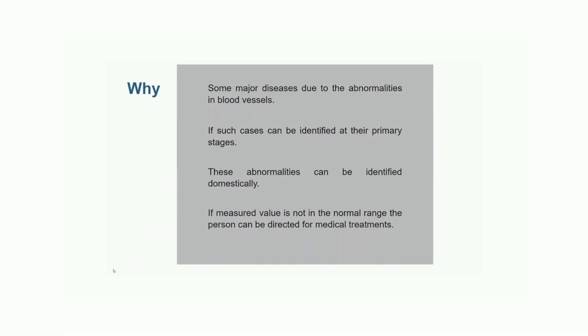There are some major diseases which are causing abnormalities. Such diseases are peripheral artery disease, carotid artery disease, arteriovenous malformation and deep vein thrombosis. By using this method, such abnormalities can be identified even domestically. If the measured values are not in the normal range, such person can be directed for medical assistance.